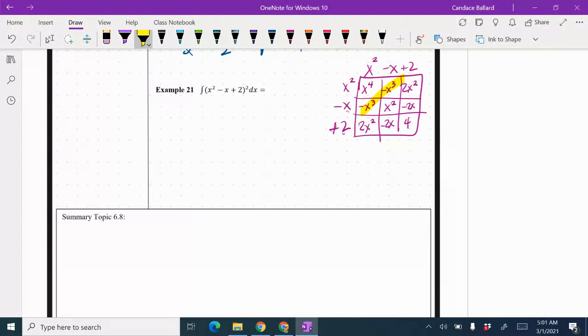And remember our diagonals are typically our like terms so we're going to combine those. As we're combining them I'm going to write it back into my integral. So it would be x to the fourth.